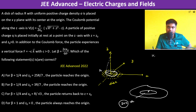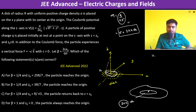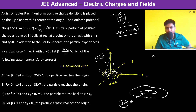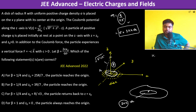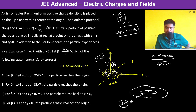Therefore dq is equal to sigma into 2πr dr. Now from the geometry, z is the height and r is the ring radius, so the distance from the ring to the point on the z-axis is √(z² + r²). The potential contribution is k·dq / √(z² + r²), which is k·sigma·2πr·dr / √(z² + r²).